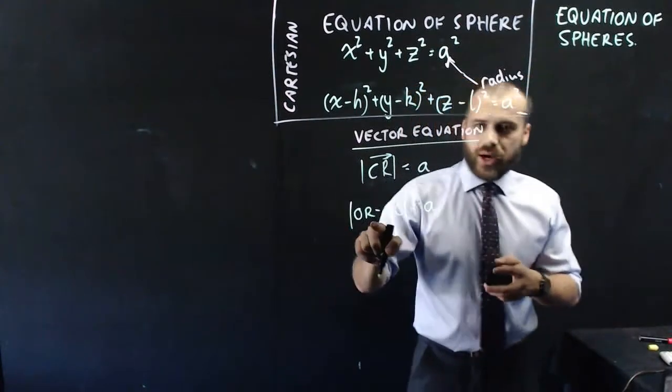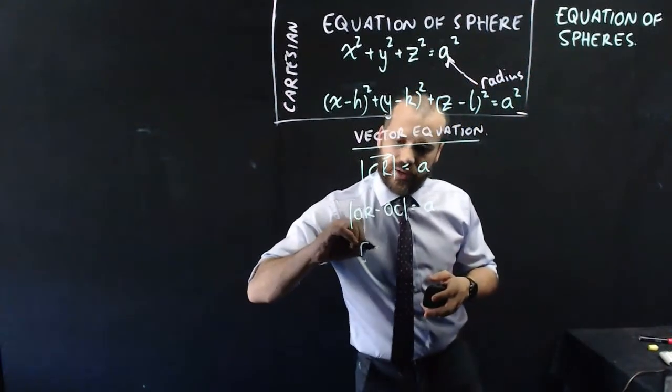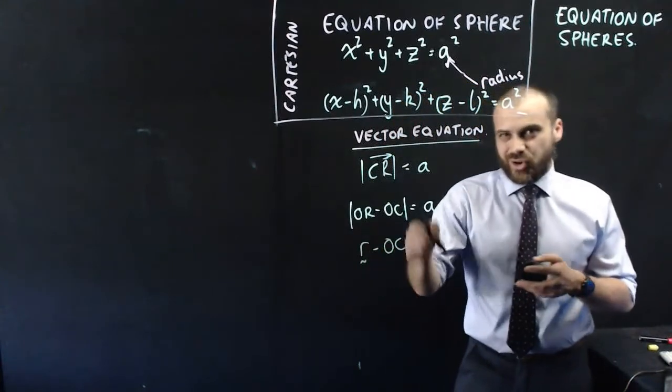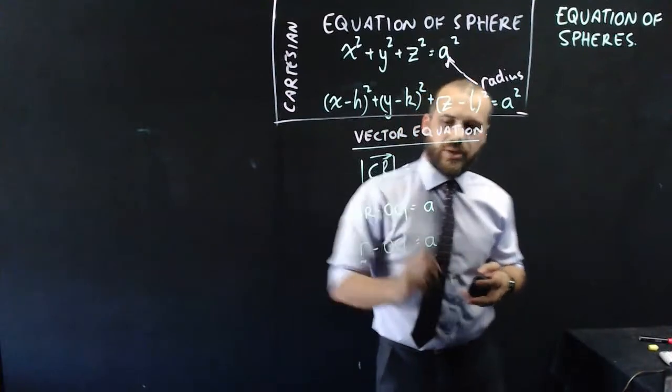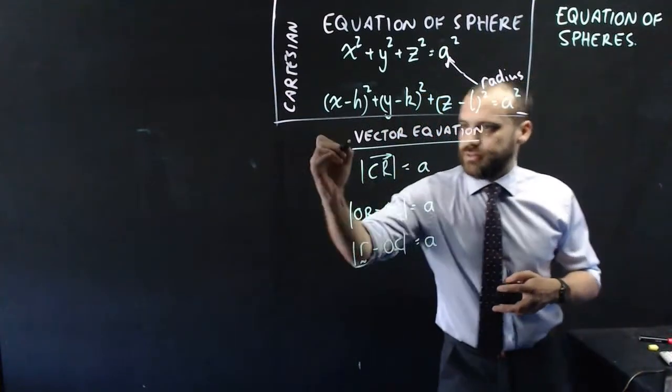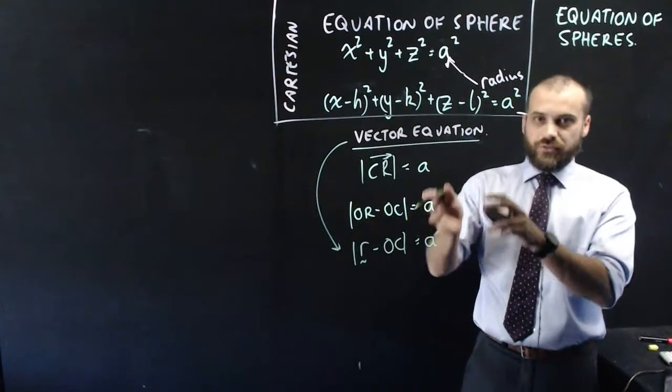So instead of or, we'll just call that vector r. And I'll keep that here. That's the position vector of the center of the circle. The magnitude of that needs to be equal to a. And that is the vector equation of a sphere.